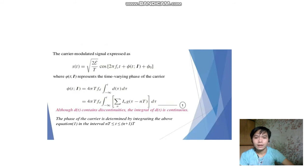The carrier modulated signal is expressed as s(t) equals square root of 2E/T cosine of 2πf_c t plus θ(t) plus θ_0, where θ(t) represents the time-varying phase of the carrier.